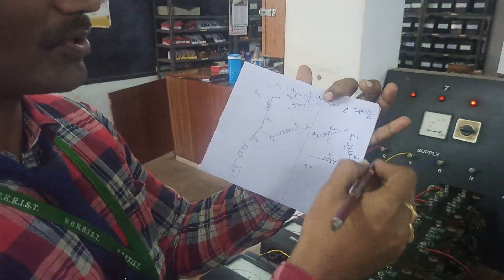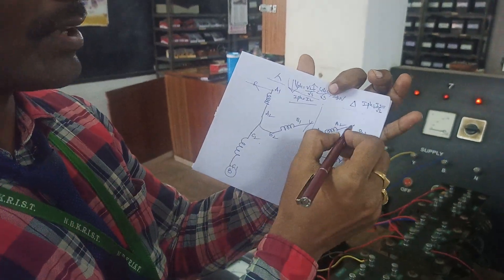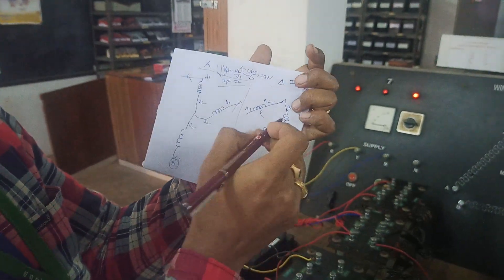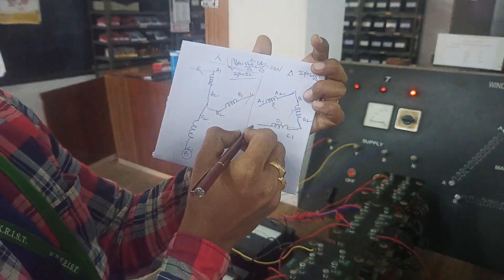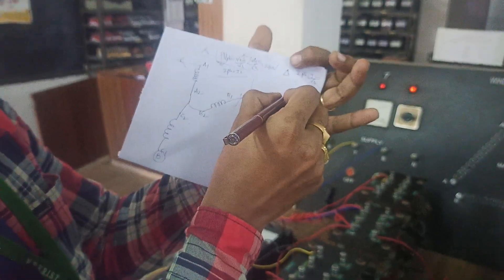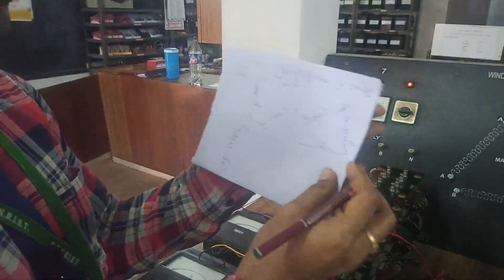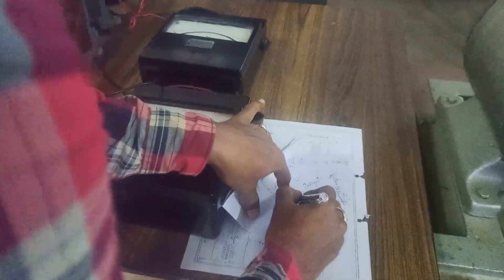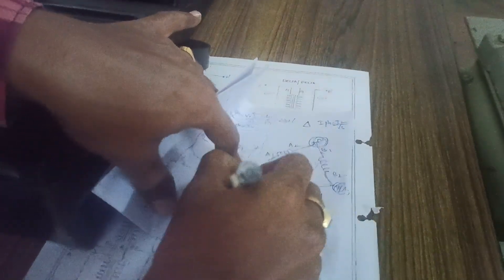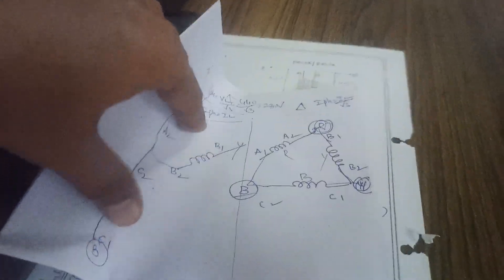How to connect this in delta fashion: connect A2 terminal to B2, connect B2 terminal to C1, connect C2 terminal to A1, and you start exiting here as R, Y, B. R, Y, B are three phases phase shifted with 120 degrees.